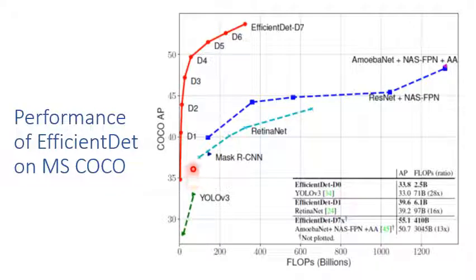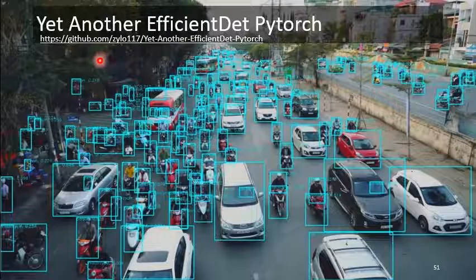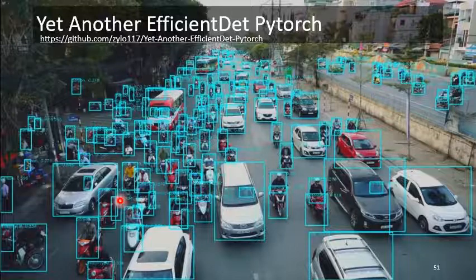There is a trade-off between speed and accuracy. EfficientDet-D0 has only 2.5 billion FLOPS but lower accuracy, though still higher than YOLO v3. The PyTorch implementation of EfficientNet and experiment results show the model can detect very small objects — it is very efficient and accurate.